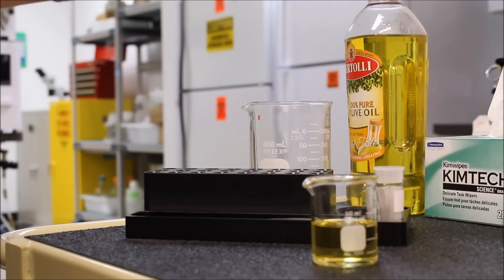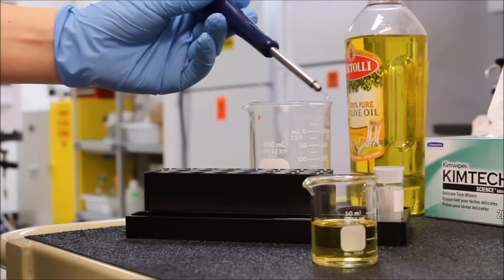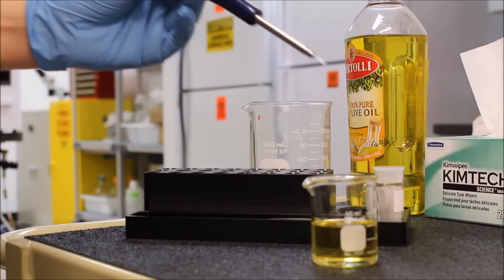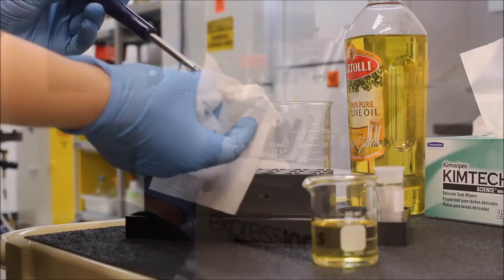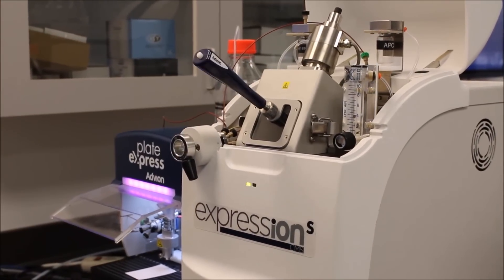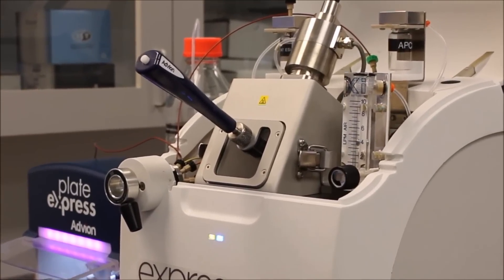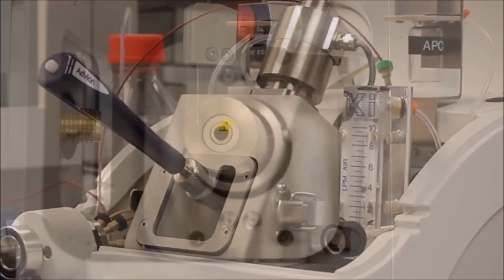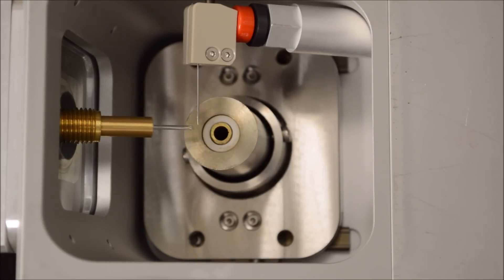Chemists simply dip the closed end of the glass capillary into the sample of interest or scrape the surface of the solid and then place the capillary into the mass spectrometer. Heated nitrogen in the ASAP-enabled APCI ion source will vaporize your sample, whereas the corona discharge needle will ionize it.